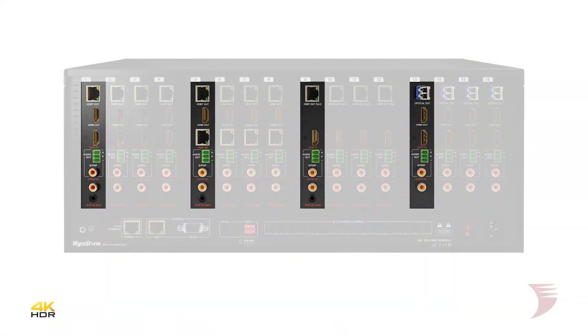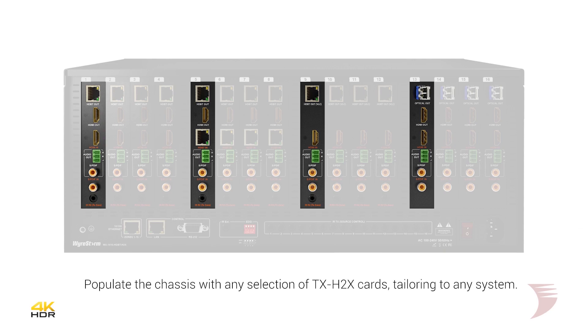The custom chassis can be populated by any selection of multi-format transmission card options, supporting 18GB inputs and outputs, decentralized sources, and 4K HDR over both HDBase-T and multi-mode fiber, giving installers many options to specifically tailor their installation to their application.